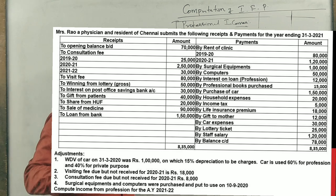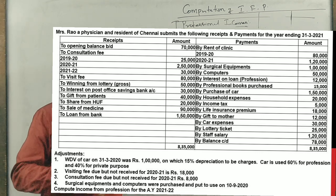Debit side is consultation fee for three years, visiting fee, winning from lottery please don't take it, interest on post office don't take it, gift from patient take it.